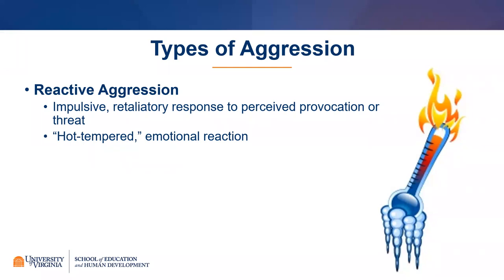In addition to that bodily response, people who react aggressively with this reactive subtype may also be perceiving things in their environment as threatening. They may, in some cases, be misinterpreting things as hostile even when they may not be. If somebody continues to misperceive or view things as threatening over time, we call that a hostile attribution bias. Over time, that may lead them to behave aggressively because they're really misinterpreting things in social situations. That characterizes reactive aggression, and we're going to come back to this subtype throughout the talk.